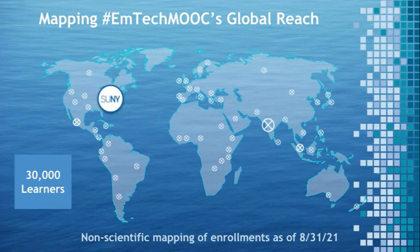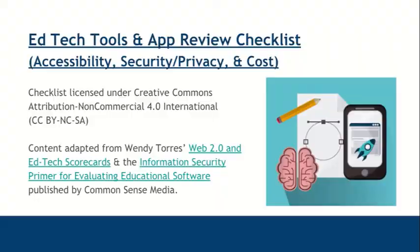This map shows the reach of EmTech. We are very close to 30,000 learners. The circles on the map show the size of the target audience — for example, India has quite a few, Mexico as well, and the biggest group is over New York State where SUNY is located.